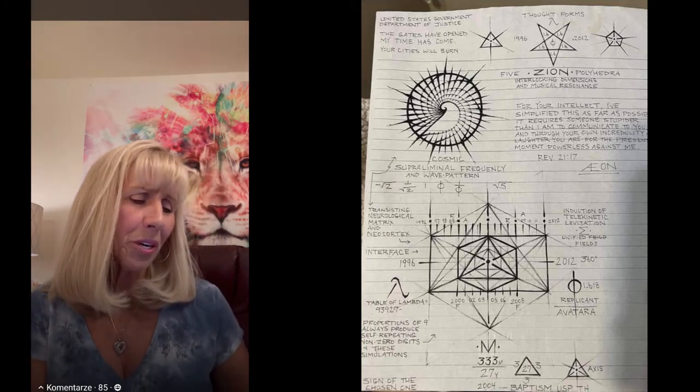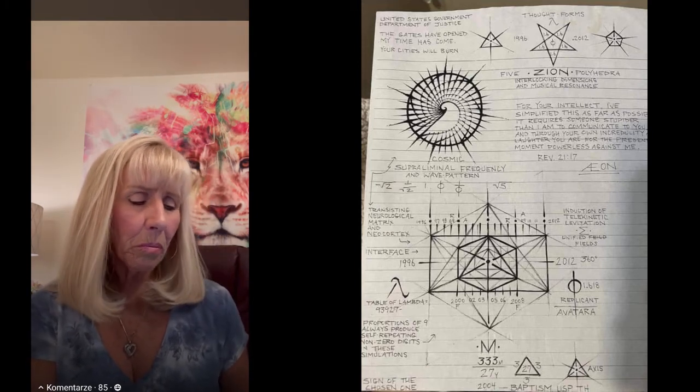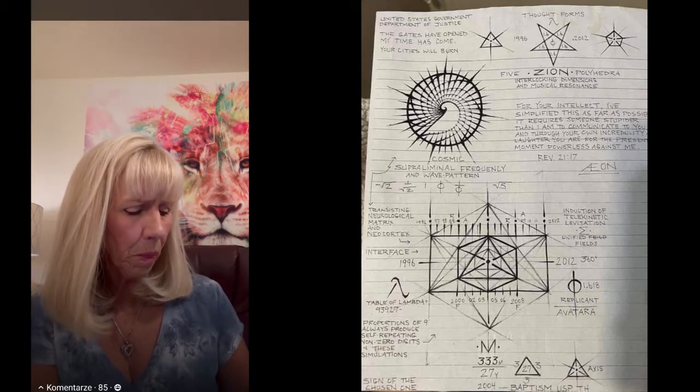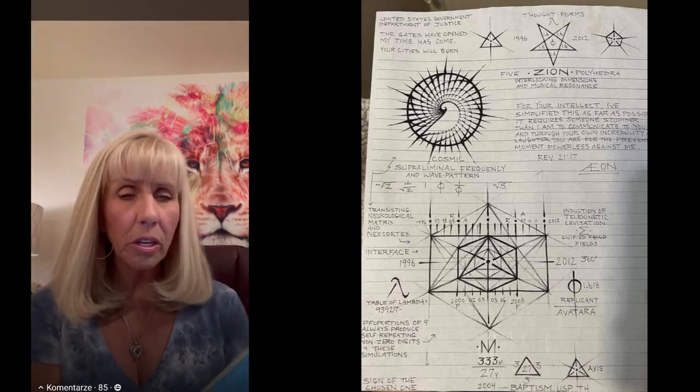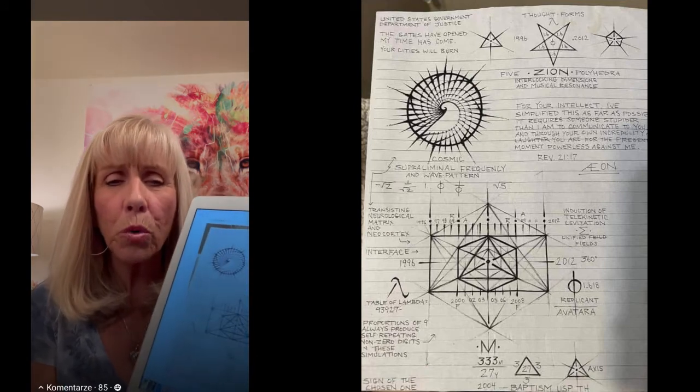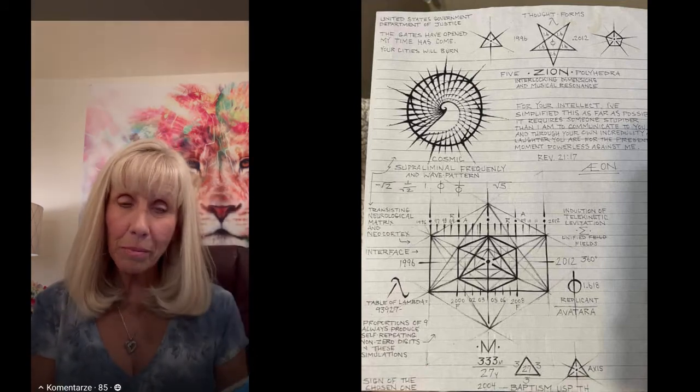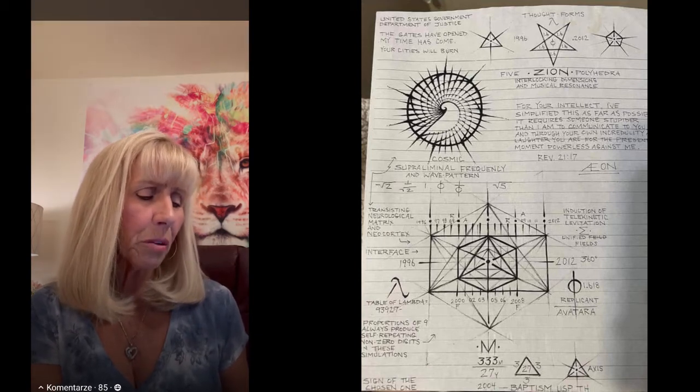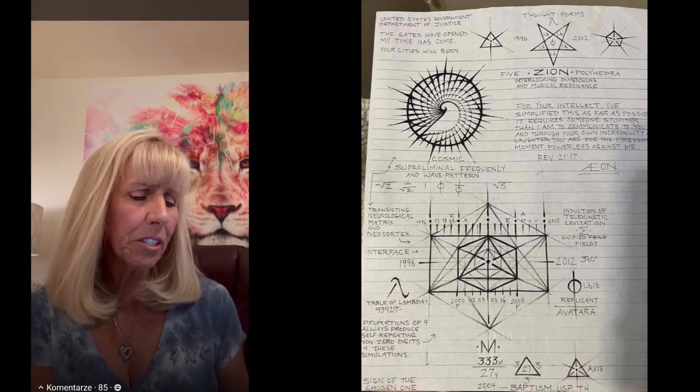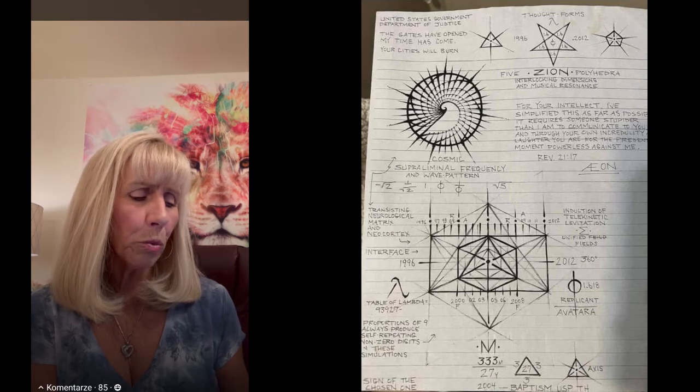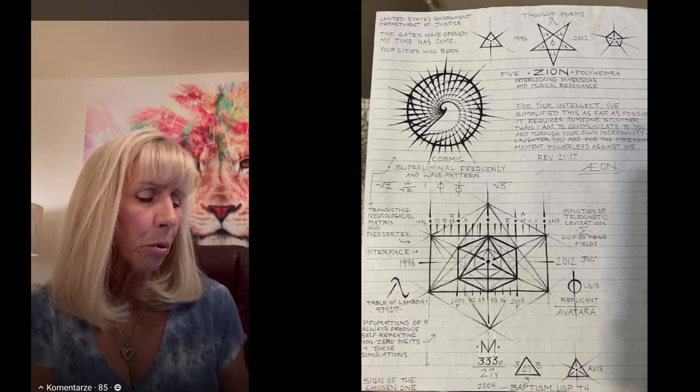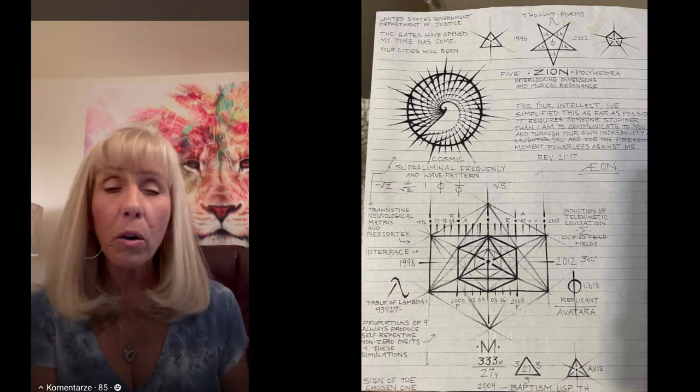What he has written here—let me explain. Down in the corner, 'Sign, one of the chosen ones.' He wrote this to them: 'For your intellect I've simplified this as far as possible. It requires someone stupider than I am to communicate this to you. Through your own incredibility and laughter, you are presently powerless against me.'